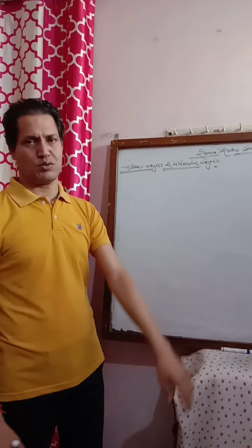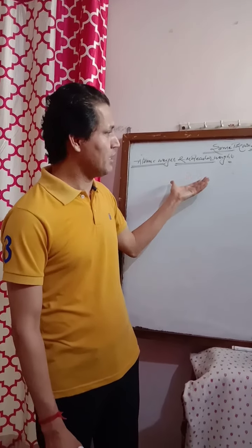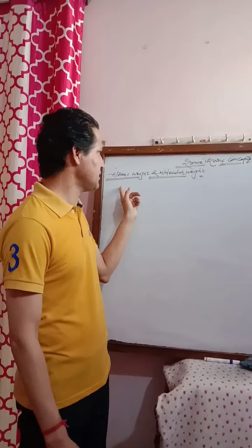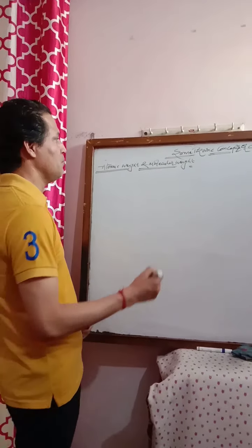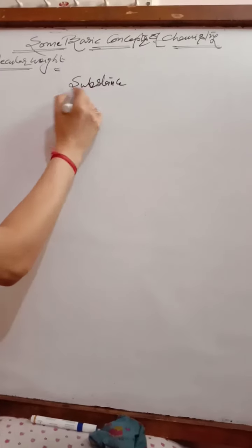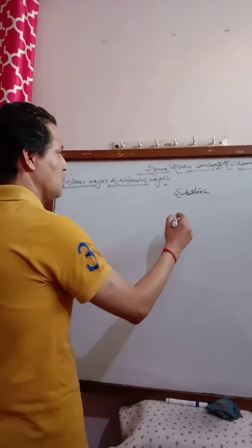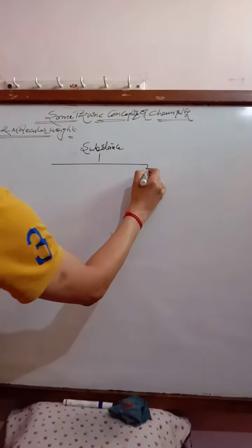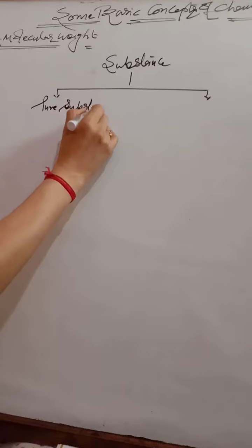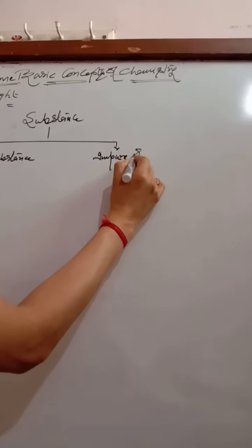Before going to know about Atomic Weight and Molecular Weight, let me cover some basic concepts in detail. We have matter, also called substance, which we categorize into two parts: one is called pure substance and the other is called impure substance.